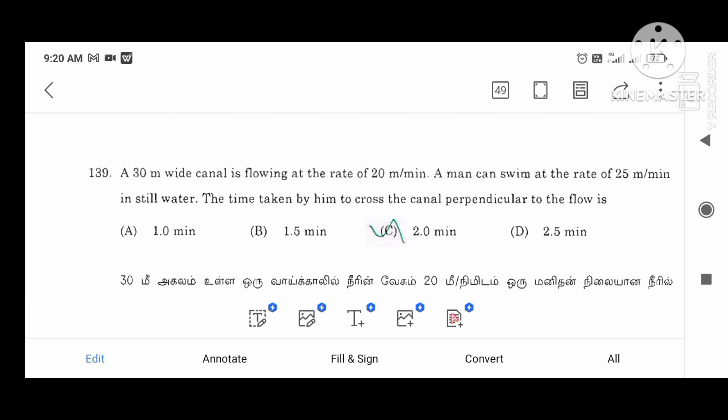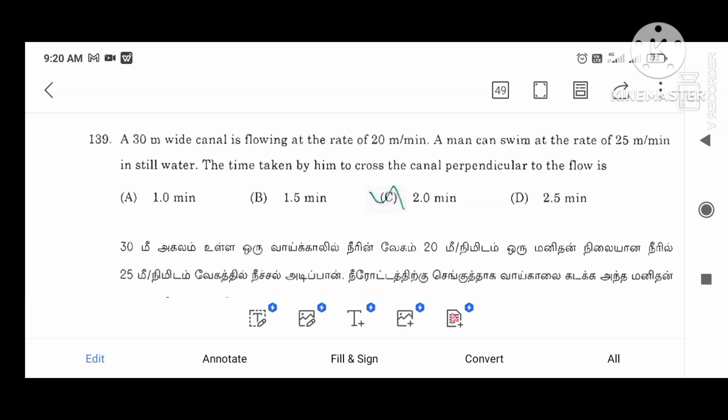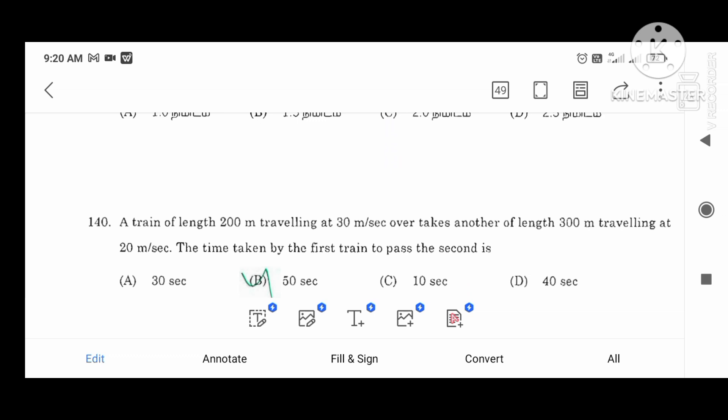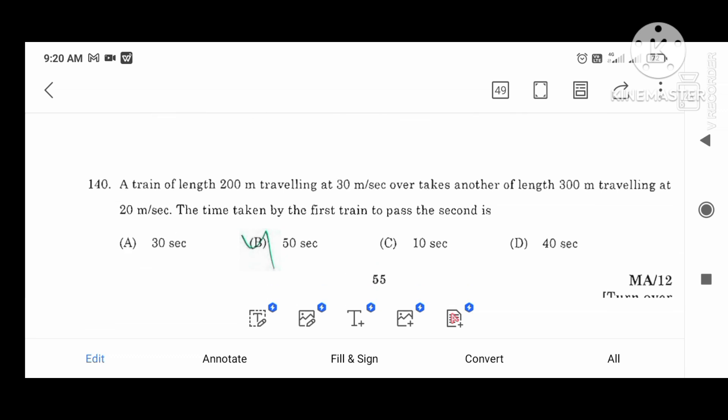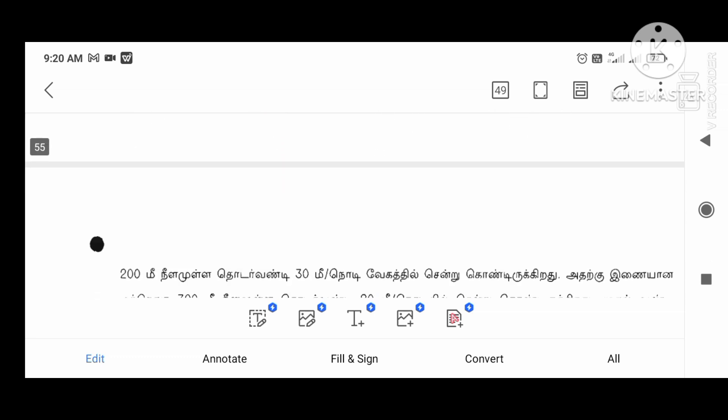If you have a 30cm wide canal flowing at the rate, you have a problem question. This train is 2m traveling at the rate, 30m second overtakes another length of traveling at the rate. If you have a full diagram, you can see the result of the diagram. The question and answer is 9. That's very important. Now let's take a look at the next question.